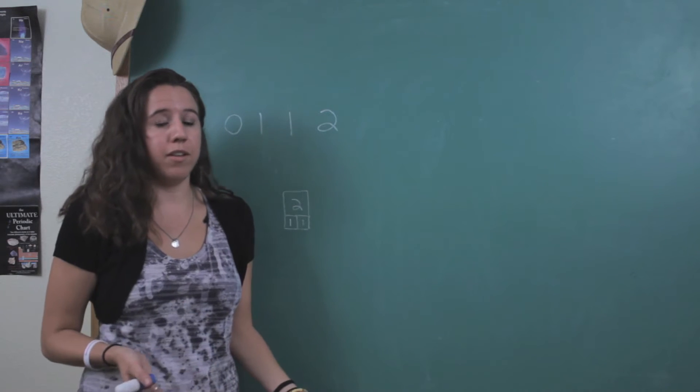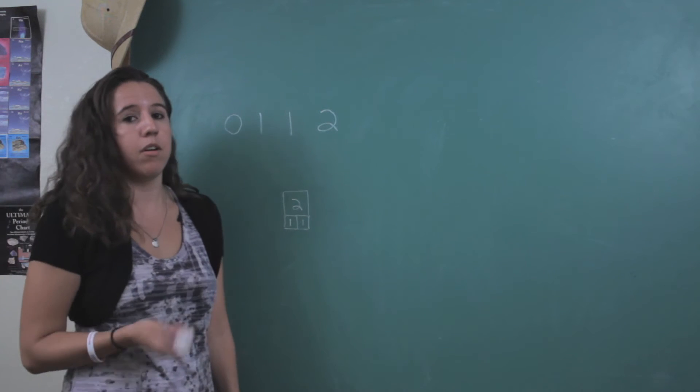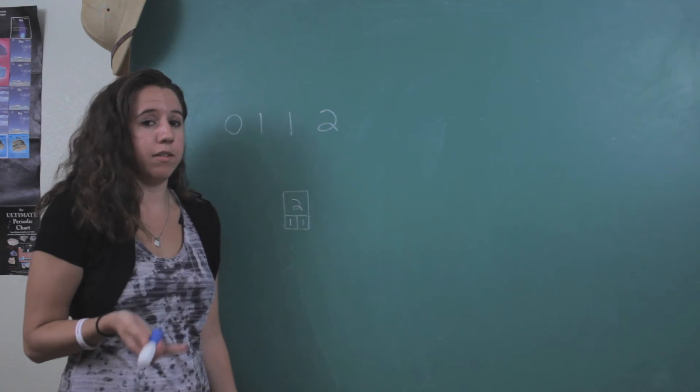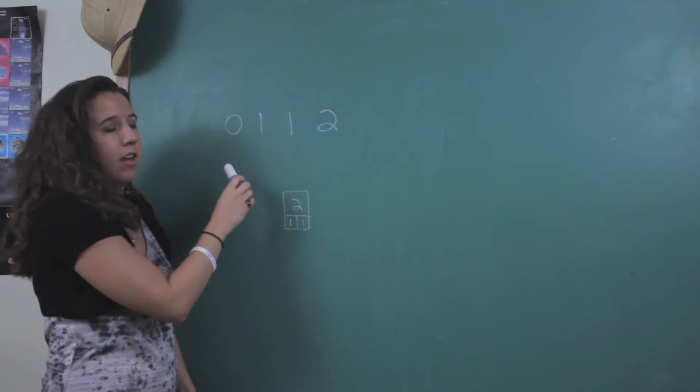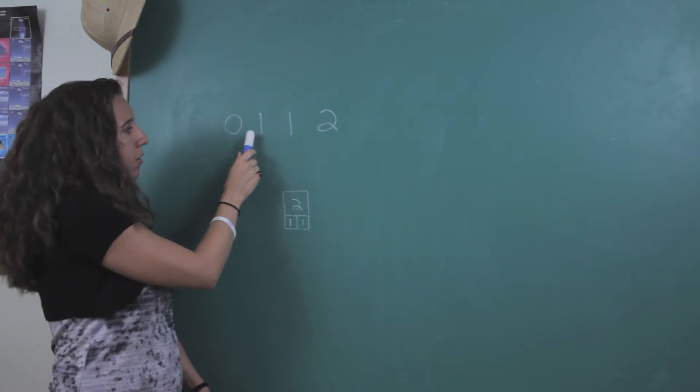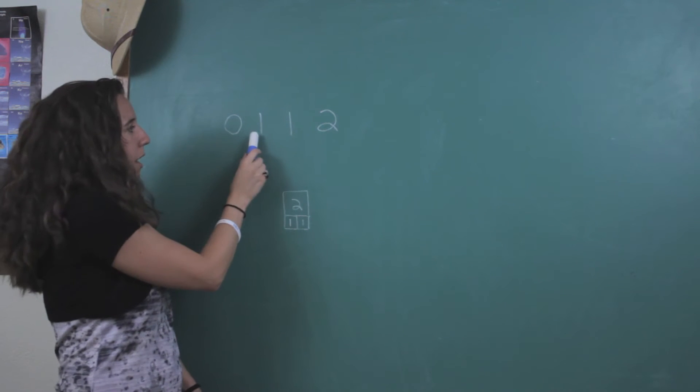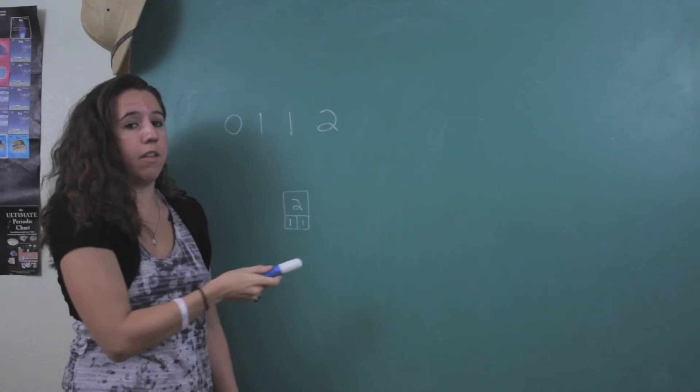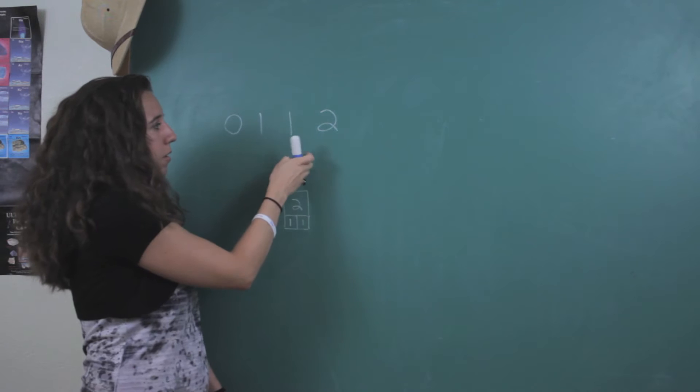So a Fibonacci sequence is a recurring pattern of numbers and the pattern itself is really simple. You basically take the two numbers that you're dealing with initially and you add them, and whatever they add up to, you write that number down next. And then you do that same thing again, but this time with the second two numbers.